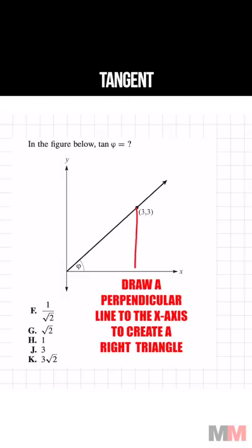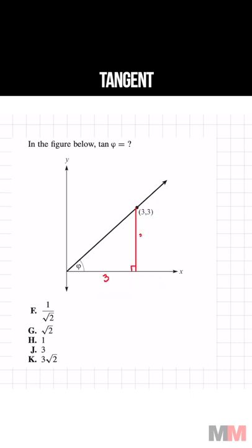Completing the triangle by drawing a vertical line like that, this point is telling me that this has a width of 3 and it's got a height of 3.